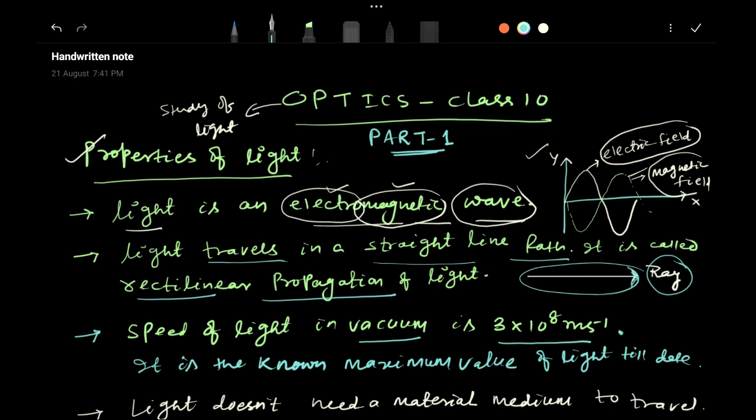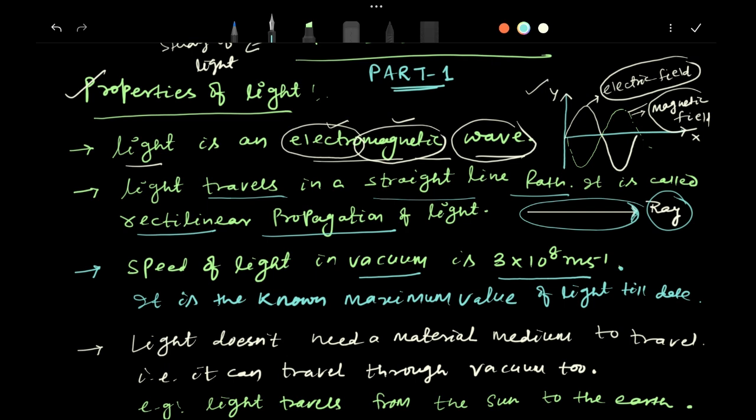Third point: the speed of light in vacuum. Try to write this spelling correctly: v-a-c-u-u-m. Speed of light in vacuum is 3 × 10^8 meter per second, or sometimes people write it 3 lakh kilometer per hour. It is the maximum value known to us. Light is traveling with this much. We don't know whether light can travel higher than this. There is no solid practical proof about it or theoretical proof, but generally we know up to this for class.